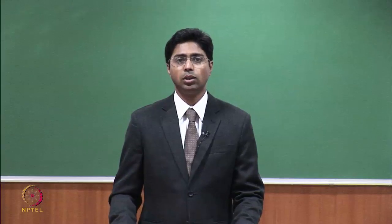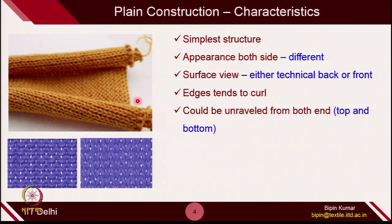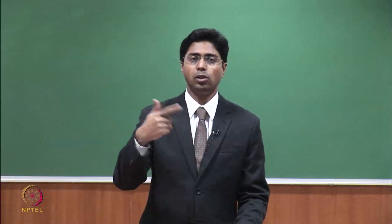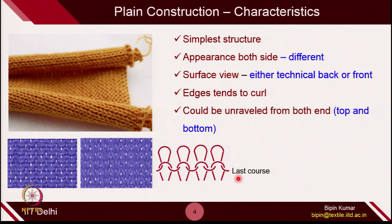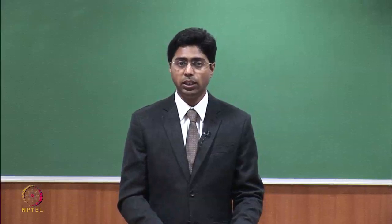It curls either from the course direction or wale direction, depending on where you fold the fabric. Another basic characteristic shown in demo number 1 in week 1 is that it can be unraveled from both ends. If you catch the yarn from the top or bottom and pull, all the loops will unravel and the fabric will completely disappear, giving you the entire yarn. In the last course knitted on the machine, the loops have no holding for the head, so all heads come out from the bottom loops — all loops come out as a straight yarn segment.